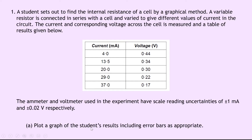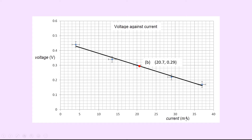In part A it says plot a graph of the student's results including error bars as appropriate. A good place to start would be to take a piece of graph paper and try the graph yourself with both your scales of current in milliamps and voltage in volts. You're going to plot voltage on the y-axis and current on the x-axis and then try plotting your points. We'll then add in error bars, and what you should get is something with voltage in volts on the y-axis, current in milliamps on the x-axis, and the origin down at the bottom.